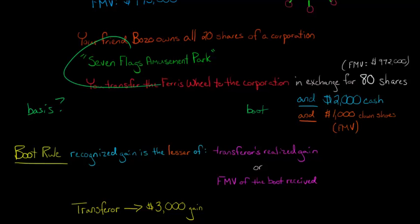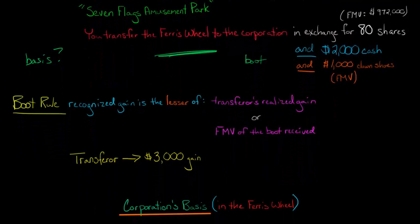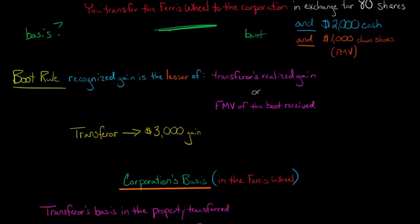Seven Flags is receiving a Ferris wheel. If Seven Flags were to sell that Ferris wheel tomorrow, we need to know their adjusted basis. We start with your basis in the property that you transferred. Your basis in the Ferris wheel was $100,000, so we'll start with that. But then we're going to have to make a couple of adjustments.